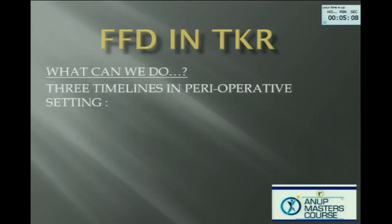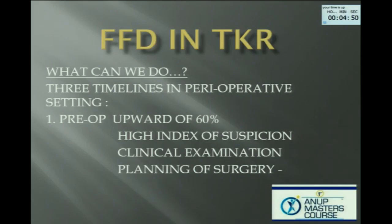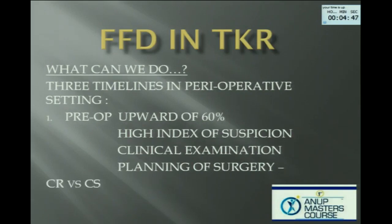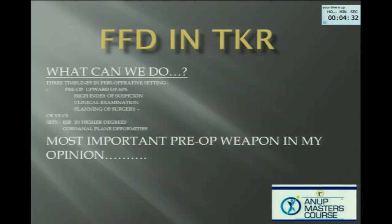What can we do? There are three timelines in the period where you have influence. Pre-operatively — remember up to 60% incidence, so a high index of suspicion. Clinical examination is important, as well as radiological examination — that helps you plan your surgery. Know what you are in for, know what sets you have to have. Have a cruciate-retaining implant available. If you have a cruciate-sparing, have a retaining there — you might have to sacrifice your posterior cruciate anyway. The most important weapon, in my opinion, is your patient.